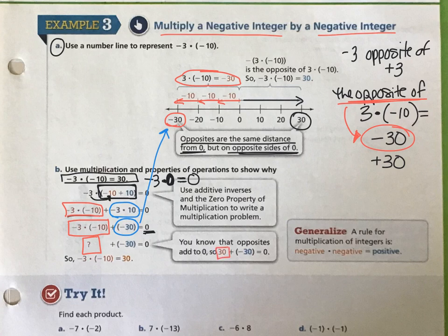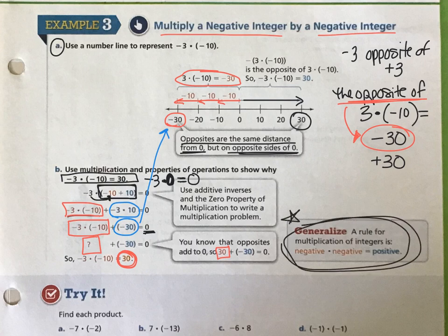And its opposite is a positive 30. So in general, our rule says multiplication of integers when you have a negative times another negative, you actually end up with a positive answer.